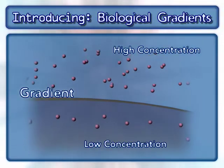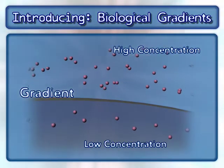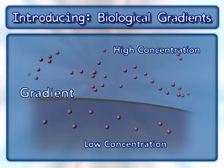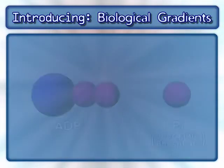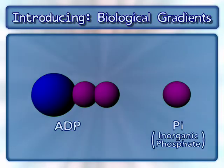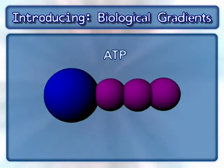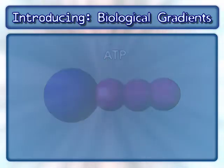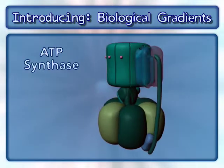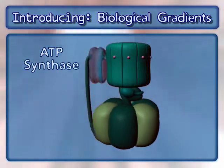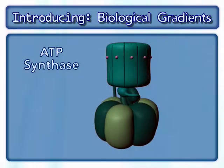This animation will demonstrate how the potential energy that results from a hydrogen ion gradient uses ADP and inorganic phosphate, also known as Pi, to synthesize ATP. This process involves an enzyme complex called ATP synthase.